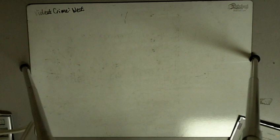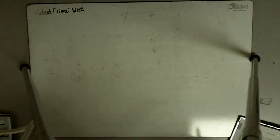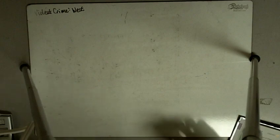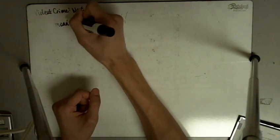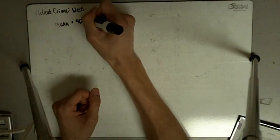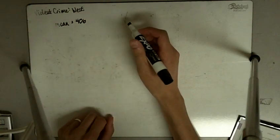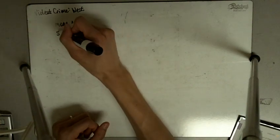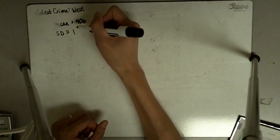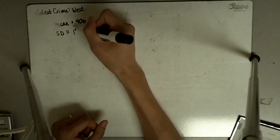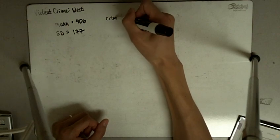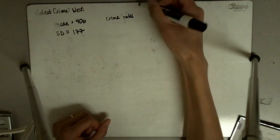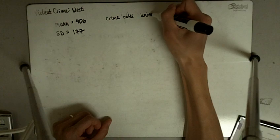The mean rate of violent crime for 24 states, per 100,000 people, was 406. So the mean is 406 crimes per 100,000 people, and the standard deviation is 177. Crime rates are approximately unimodal and symmetric.